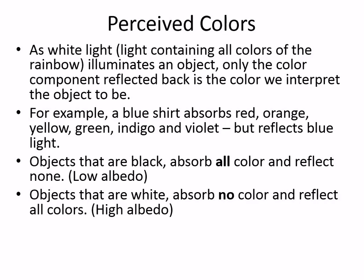Something white is basically all colors of the rainbow — ROYGBIV is reflected. So if it's a hot sunny day and you don't want to get any hotter, you wear something white because you want as much reflectivity as you can get. That's high albedo.